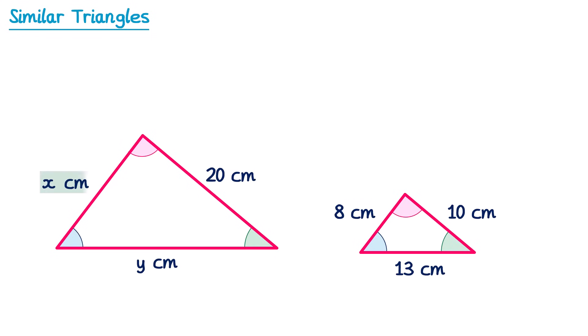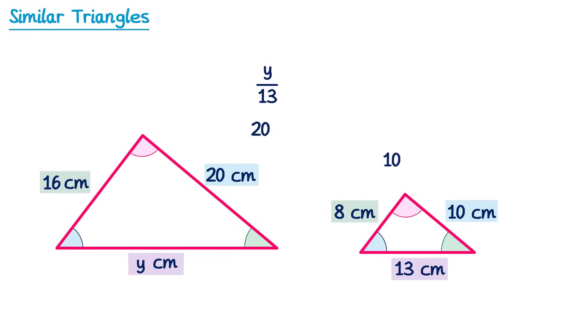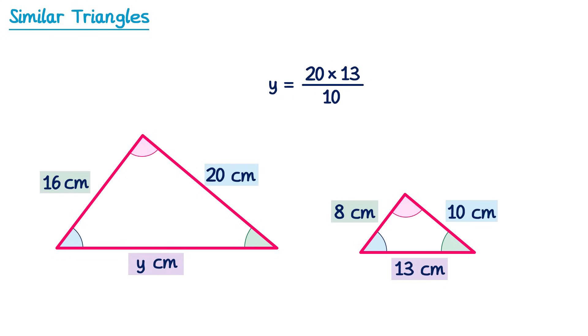We pair up corresponding sides: on the left we have X and 8, on the right we have 20 and 10. Dividing the green sides gives X over 8, which must equal 20 over 10. Multiplying both sides by 8, the 8 cancels on the left, giving X equals 160 over 10, which is 16. For Y, we write Y over 13 equals 20 over 10, multiply both sides by 13, giving 20 times 13 over 10 — that's 260 divided by 10, so Y equals 26.